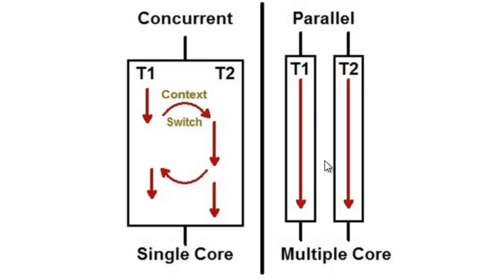In Concurrency we just have time slicing — some time is given to T1, then switched, then some time is given to T2. There are context switches here. While in Parallelism there are no context switches.